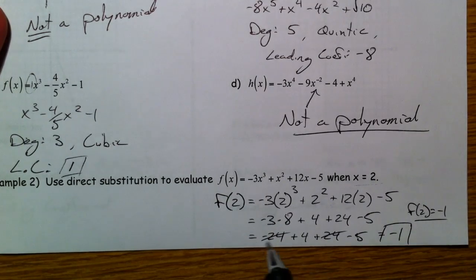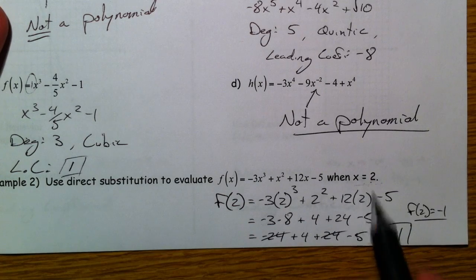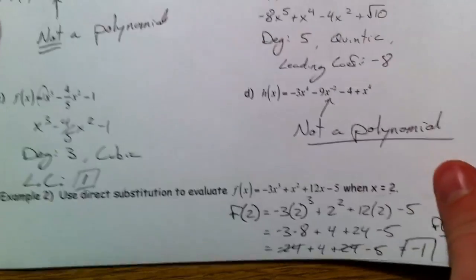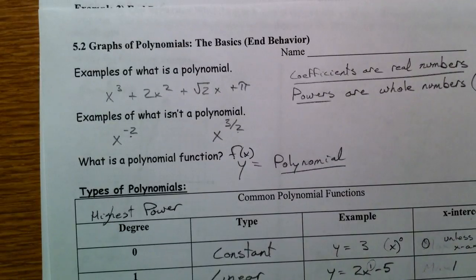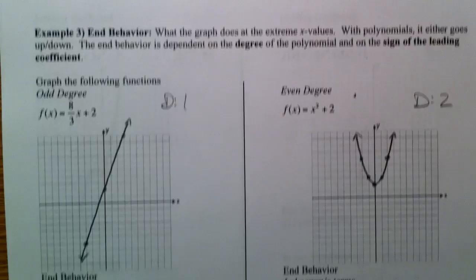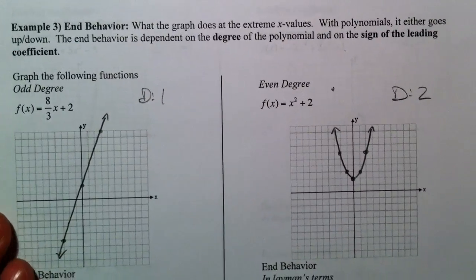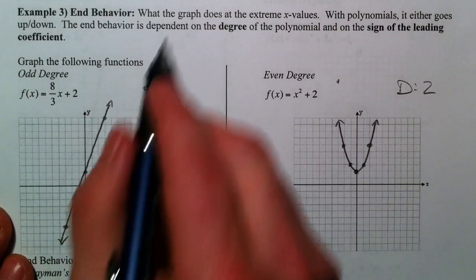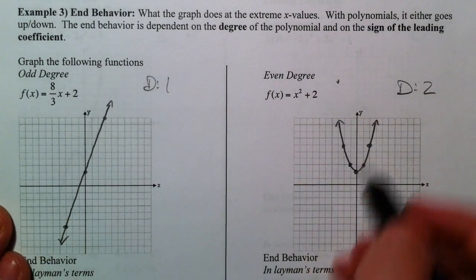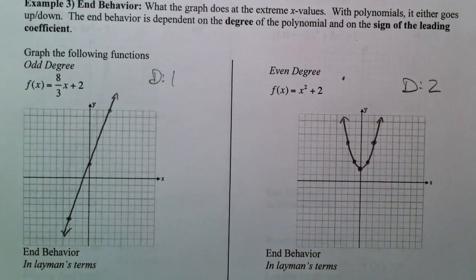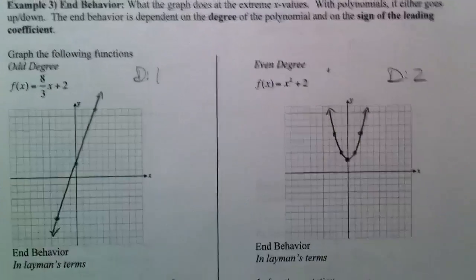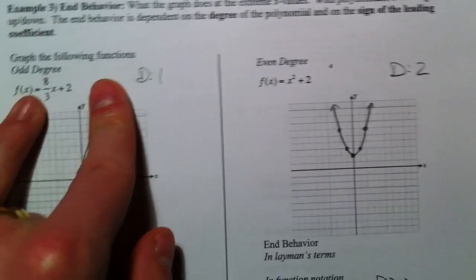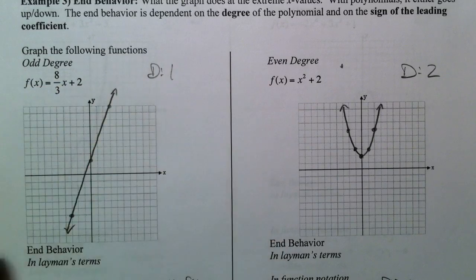Why do we do this? To remember that if you ever want to graph something, you can always plug in values and create a table. Now we're going to talk about basic end behavior — what are polynomials doing at the ends? Polynomials go either up or down at the ends, and they might sometimes both go up. I want to look at the pattern that develops based on the degree being odd or even, and whether the leading coefficient is positive or negative.